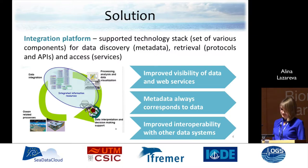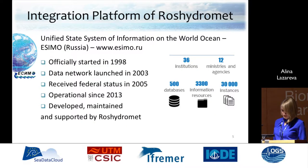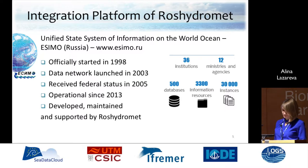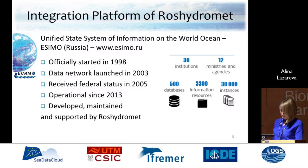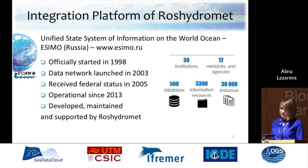The origin of the integration platform of Roshydromet is the Unified State System of Information on the World Ocean of Russia, developed by Roshydromet. Its native name is ESIMO. This system became operational in 2013, and has been developed and is now maintained and supported by Roshydromet. The head performer was RFME WDC.